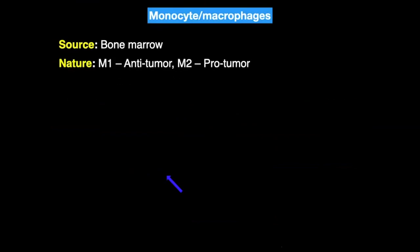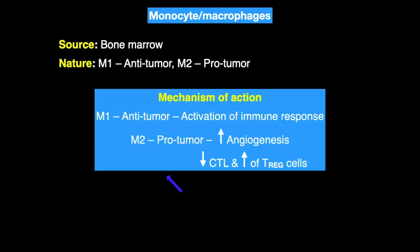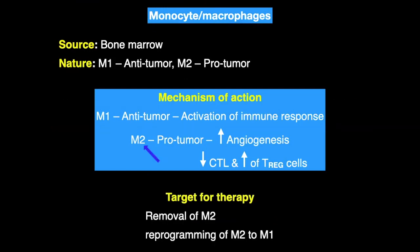The monocyte-macrophage system is also derived from bone marrow. There are two types in the tumor microenvironment: M1 and M2. M1 acts as anti-tumor by activating the immune response, while M2 acts as pro-tumor by increasing haphazard angiogenesis, reducing CTL activity, and increasing T regulatory cell activity. The therapeutic target is removal of M2 cells and reprogramming M2 cells to M1 cells to stimulate anti-tumor activity.